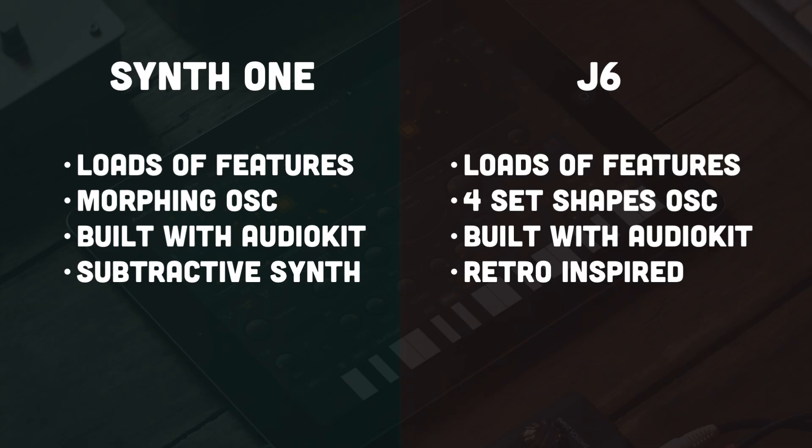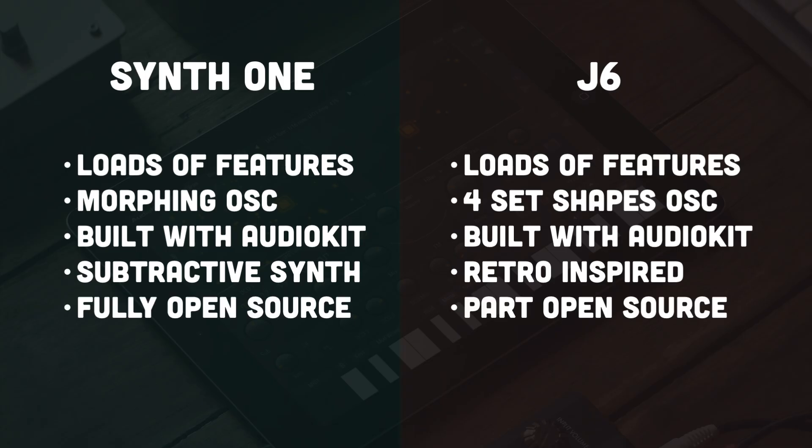Synth 1 is based more on analog subtractive synthesis with effects, while J6 takes its inspiration from more specific synths like the DeepMind and Juno. Synth 1 is completely open source — you can download the entire project — and the components that make J6 are open source, but the project as a whole is not. One of the biggest differences, and the thing people have asked for from Synth 1 for the longest time, is that J6 has full AUV3 support, meaning you can use the app inside your favorite iOS DAWs.